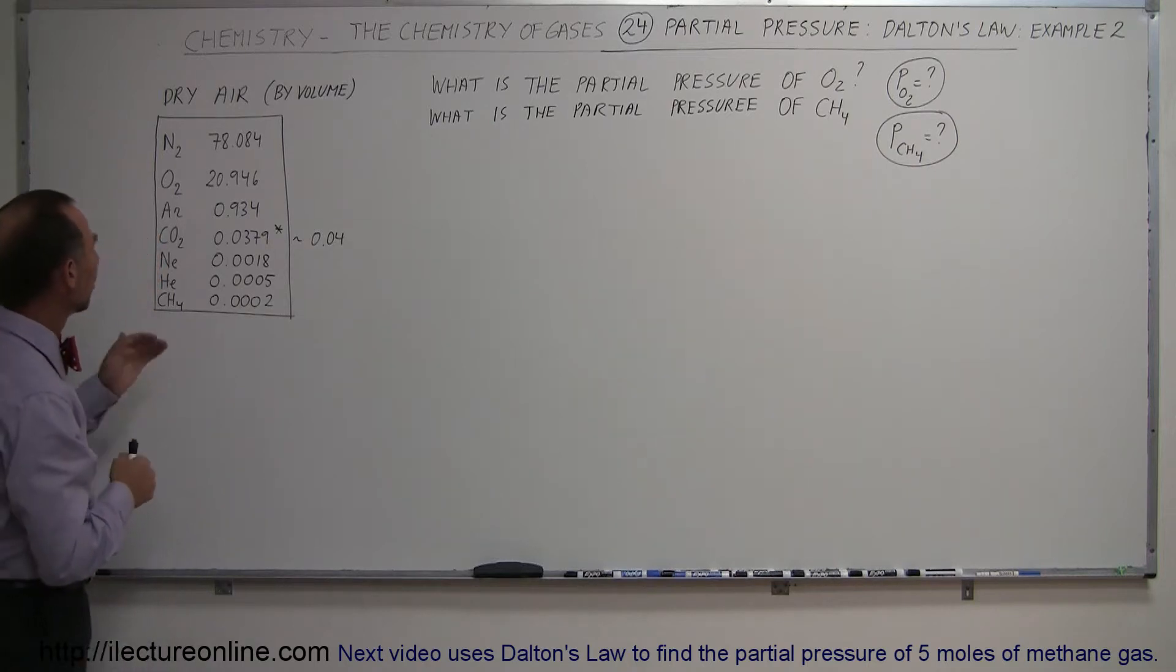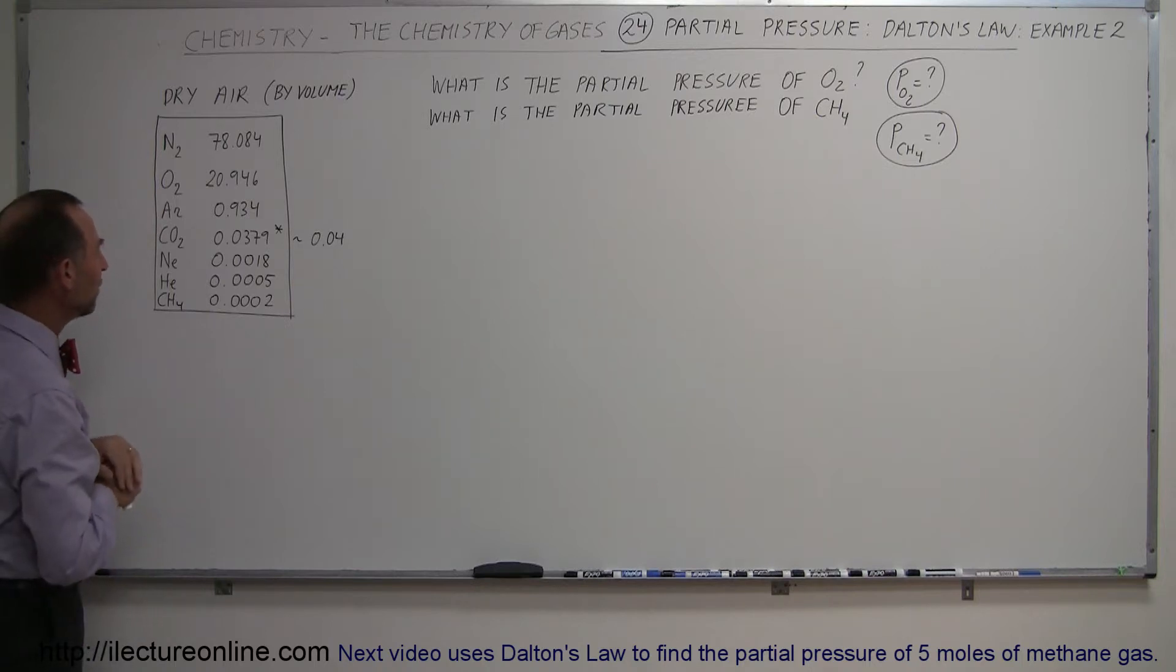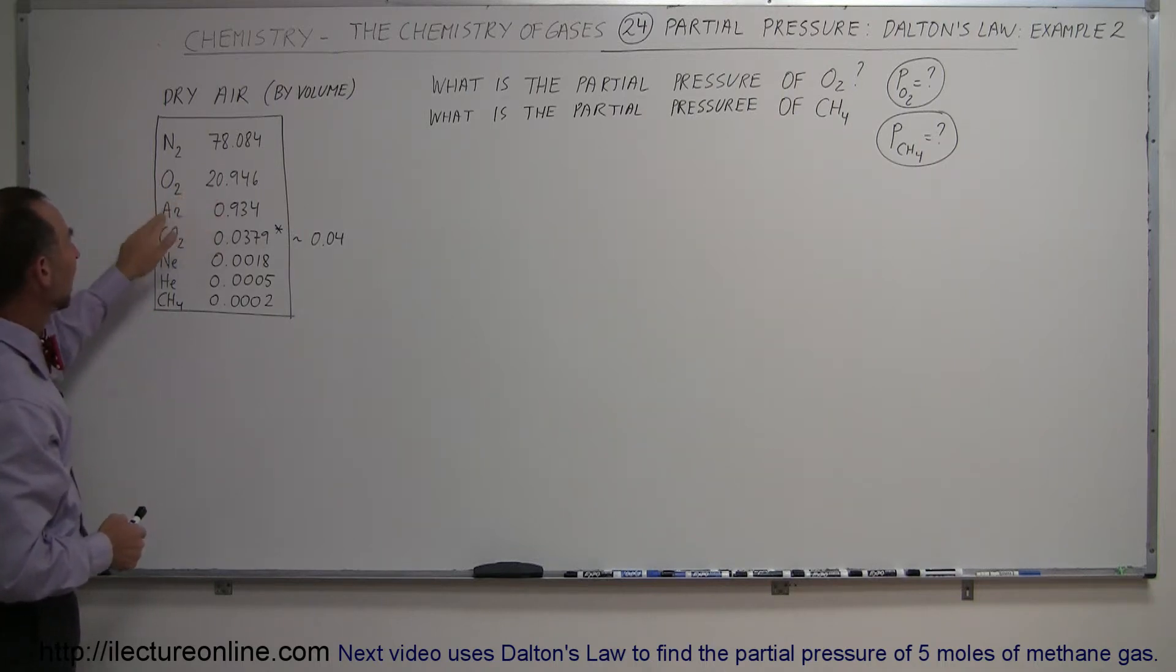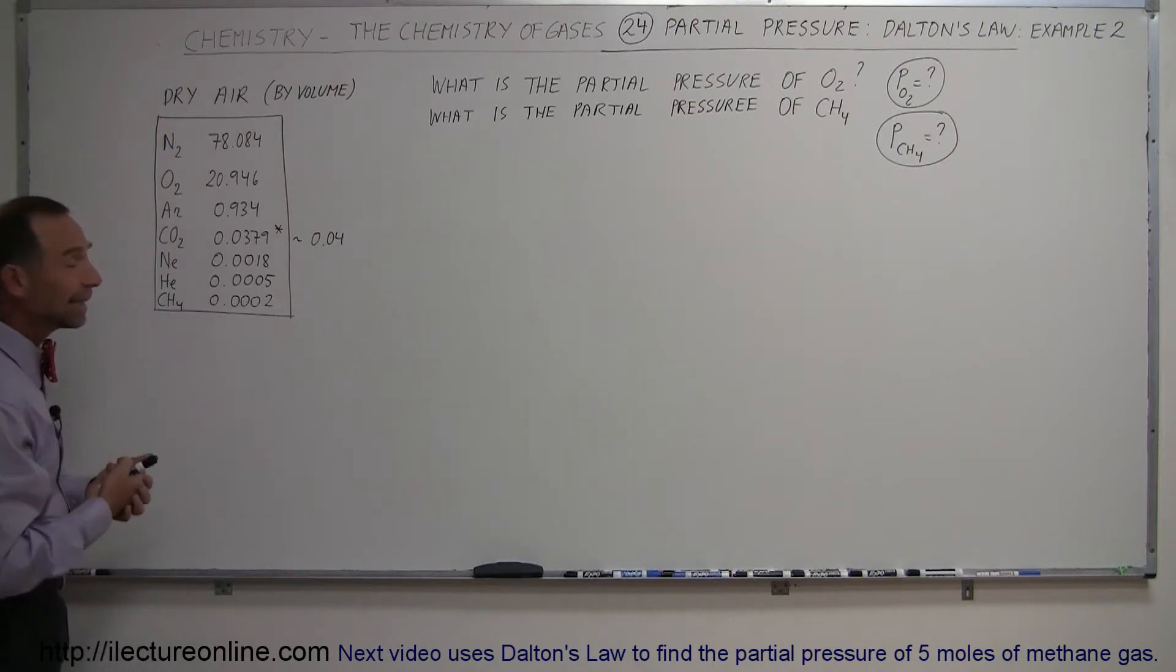Now, here I've given you some components of dry air, the most important ones found in the greatest abundance. There's a whole bunch more, but this is enough for now. Notice that nitrogen is by far the biggest constituent of dry air, followed by oxygen, and then argon. Those three together form more than 99% of all the gases in the air.